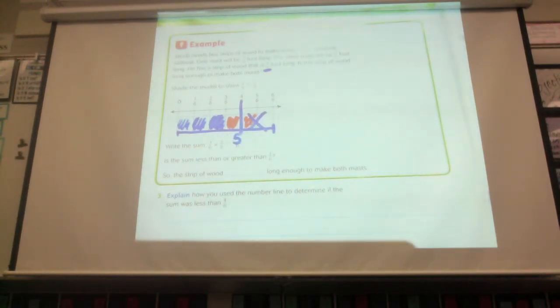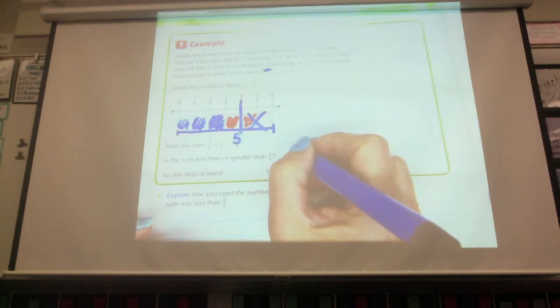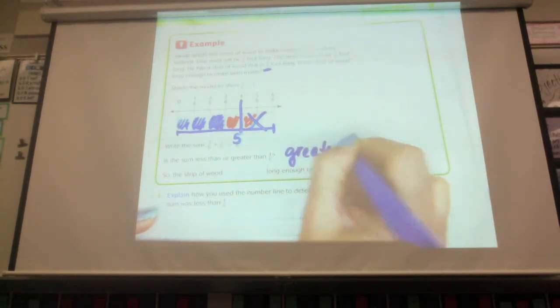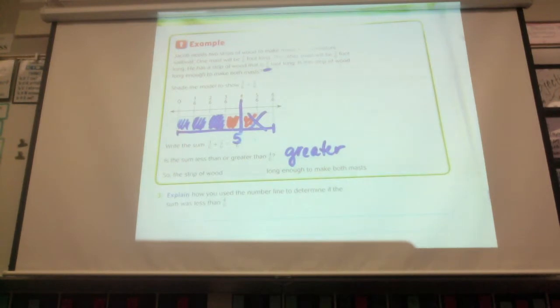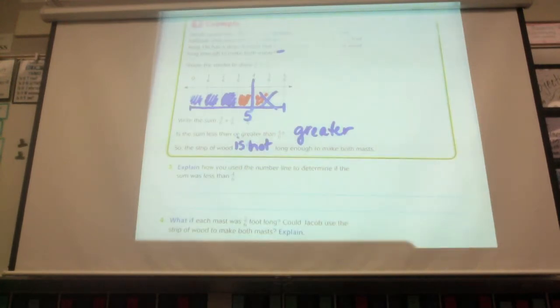Is that sum less than or greater than four-sixths? Sean. Is that sum less than or greater than four-sixths? It's greater than. So is it long enough, class? Does he have enough to make both masts? No. So the strip of wood is not. Go ahead and do number three on your own once you finish writing it.